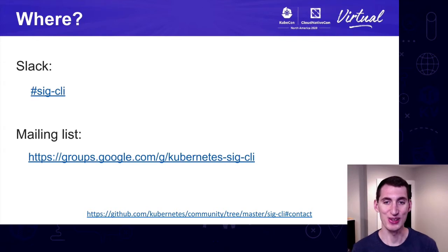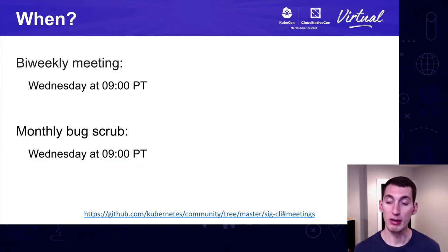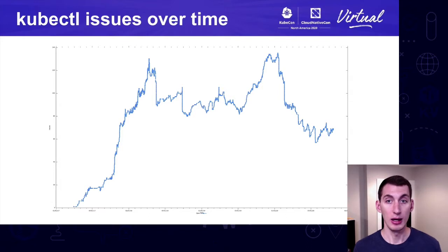You can find us on Slack in the SIG CLI channel. We have a mailing list under Google Groups. We have a bi-weekly meeting Wednesdays at 9am Pacific time, and we have a monthly bug scrub where we go over and triage open issues. This is great for people who want to get involved in the SIG. SIG CLI and kubectl has grown interest over time. If you join the mailing list, you'll receive calendar invites to the meetings I mentioned. We are always welcoming new contributors, any feedback you have, and hopefully we have some cool things cooked up for you in the roadmap in the next couple releases.